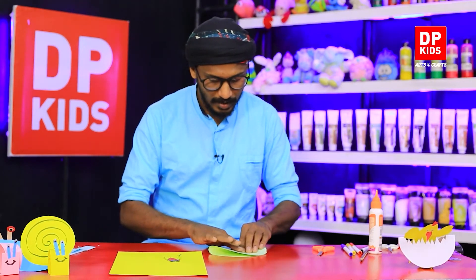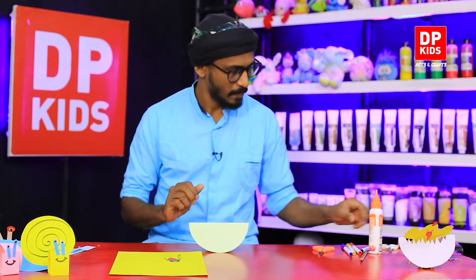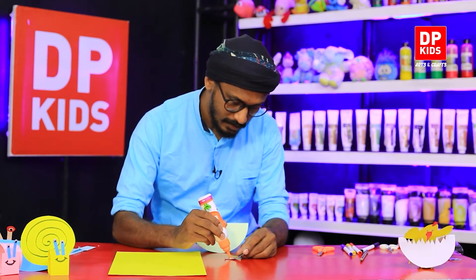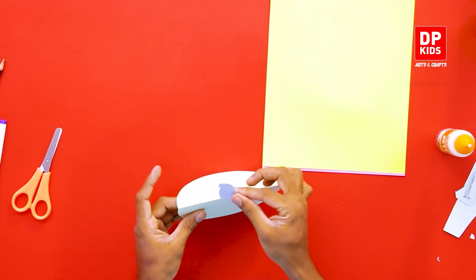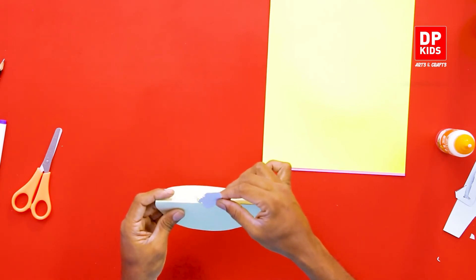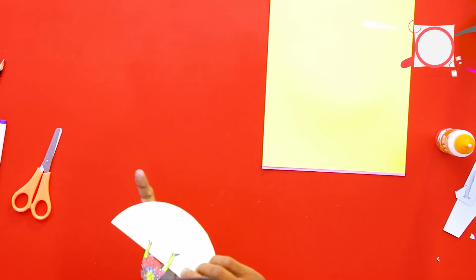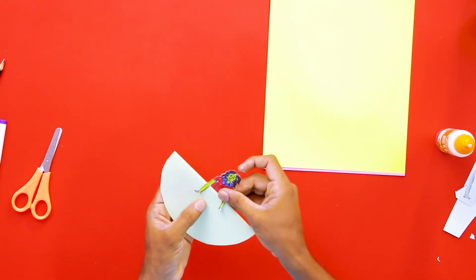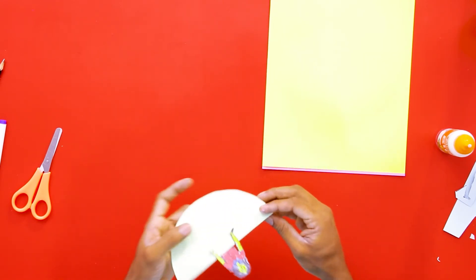Now you fold it like this and then put some glue and paste this doll onto that circle. Like this, keeping the doll's hands to the front, you paste it like this. Now it's going to be a big dress. I'm sure you have seen dolls wearing dresses like this also. Now we are done with the dress. Now what you can do is you can put different designs.